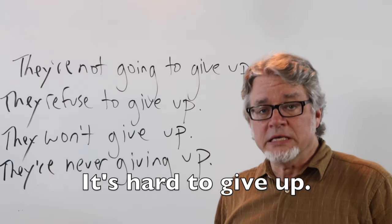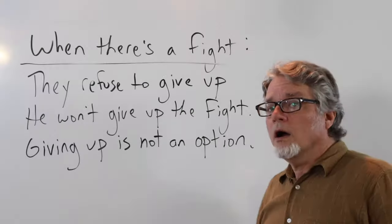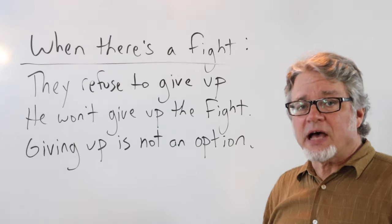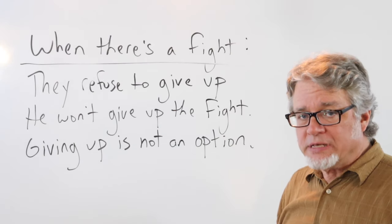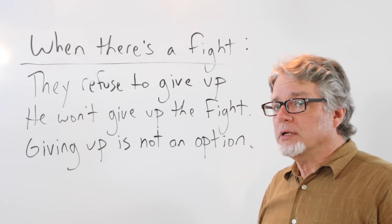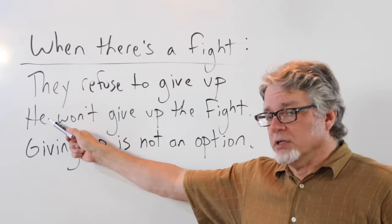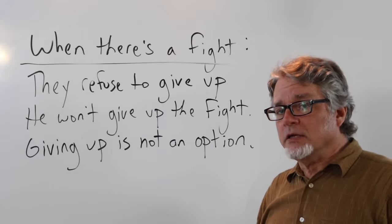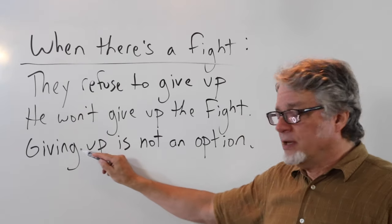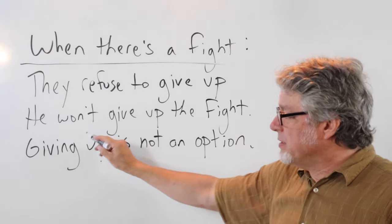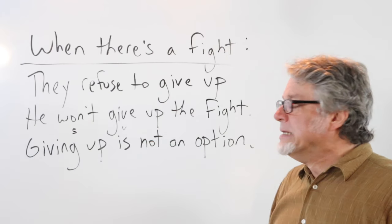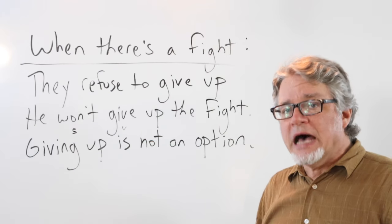It's hard to give up when there's a fight or some sort of a conflict and one side does not want to stop. They refuse to give up. If it's one person, he won't give up the fight. And in this example, giving up is used as a gerund, so this is really the subject and then this is the verb: giving up is not an option.